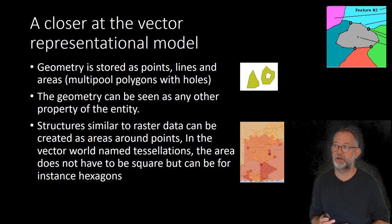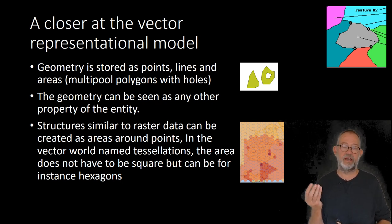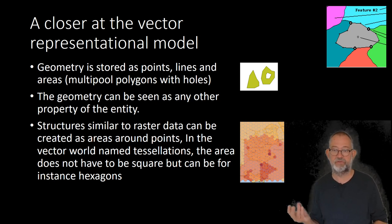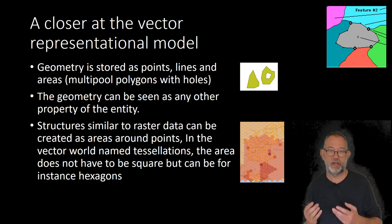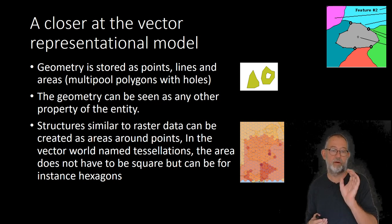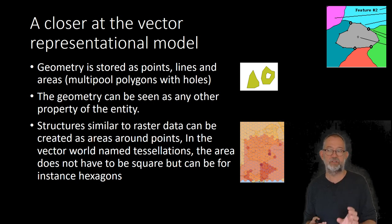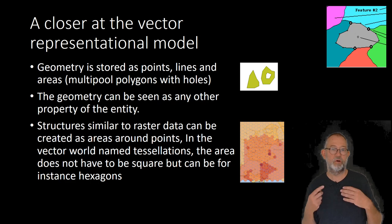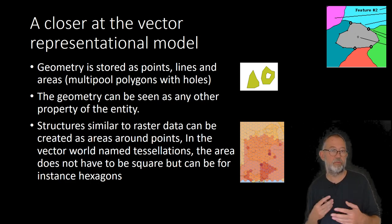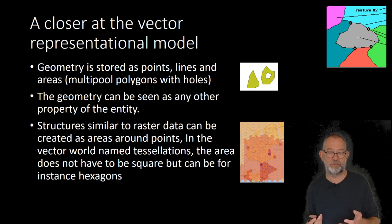In the vector version, the geometry of objects is treated as any other property. When we do the representation using the relational data model, the geometry becomes an attribute or column in the relational table. In that way, geometry is treated very much like all the other properties of an object.